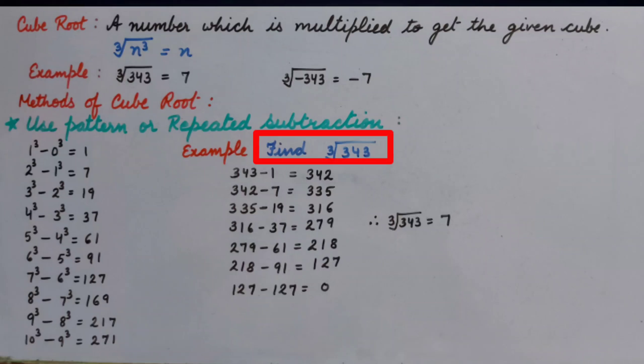For example, find cube root of 343. First of all we will subtract 1 from 343 that is 342. Then from the difference we will subtract the next number from the series that is 7. It is 335.